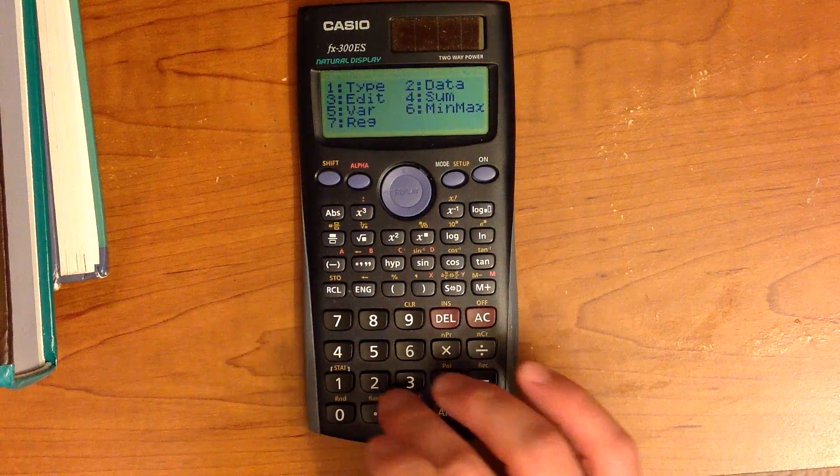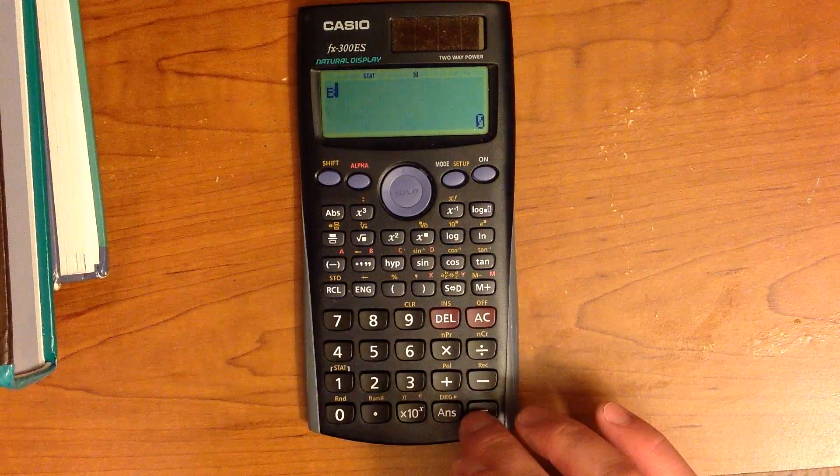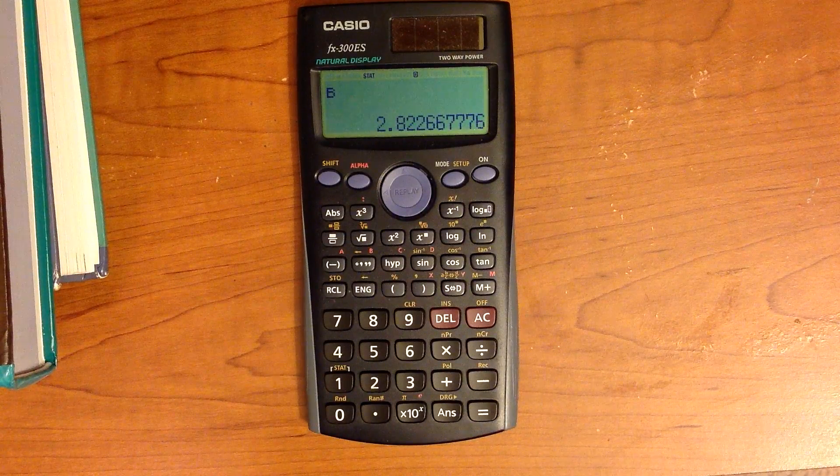Now if you want to see the slope, let's go back to Reg, hit 2 for B, and now our slope is 2.82.